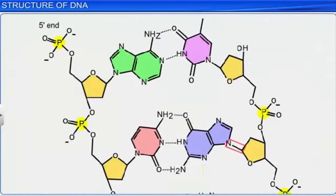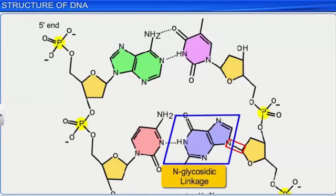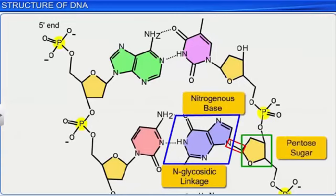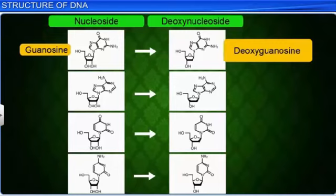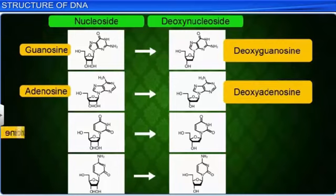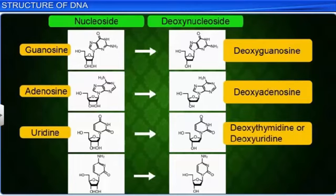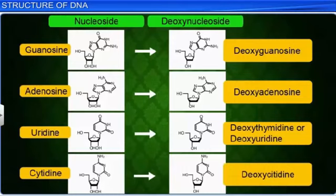Through an N-glycosidic linkage, a nitrogenous base is linked to the pentose sugar, forming a nucleoside, which can be guanosine or deoxyguanosine, adenosine or deoxyadenosine, uridine or deoxythymidine, and cytidine or deoxycytidine.